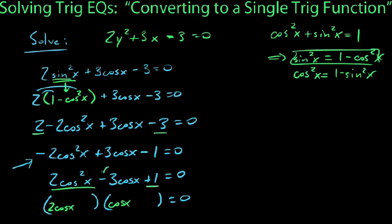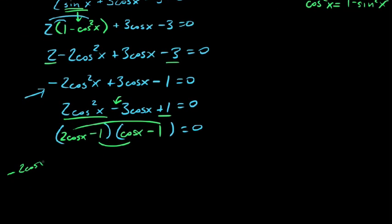Keeping in mind that our middle terms need to sum to be negative, we'd say, how about -1 and -1? It's easily checked by your outer and inner. Your outer, 2cosx times -1 is -2cosx, and -1 times cosx is -cosx, and this all sums to -3cosx, which is what we get for a middle term. So (2cosx - 1)(cosx - 1) = 0.